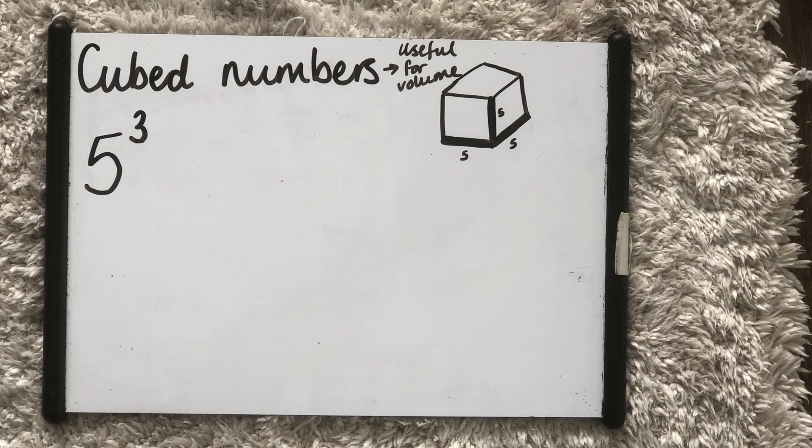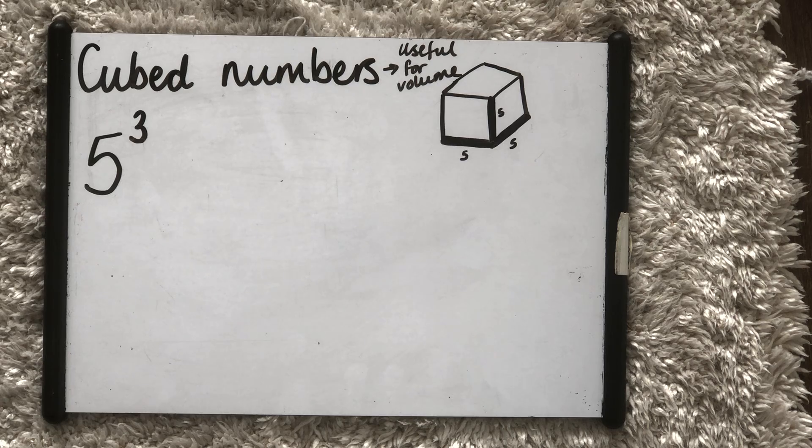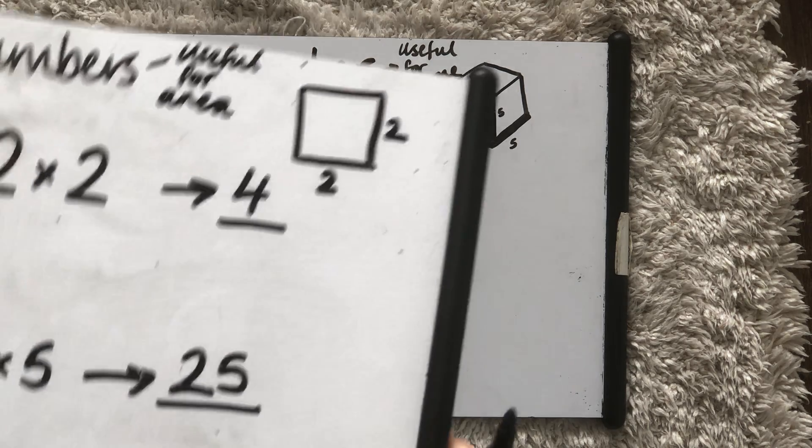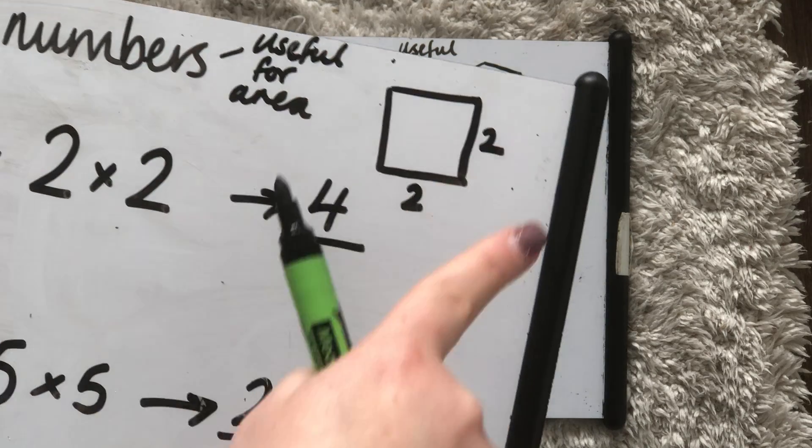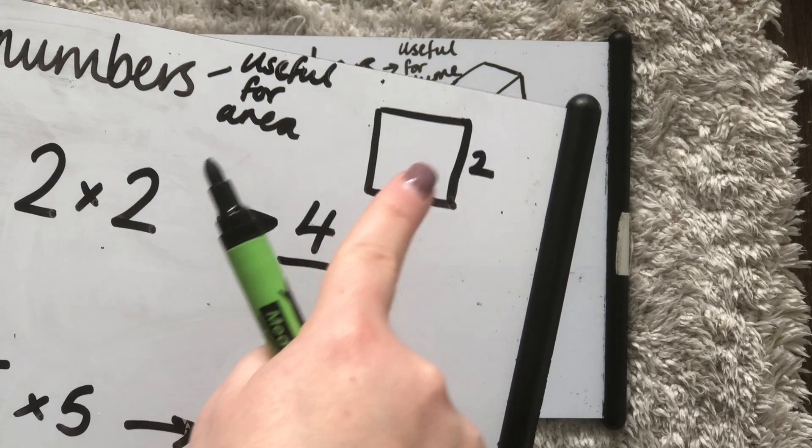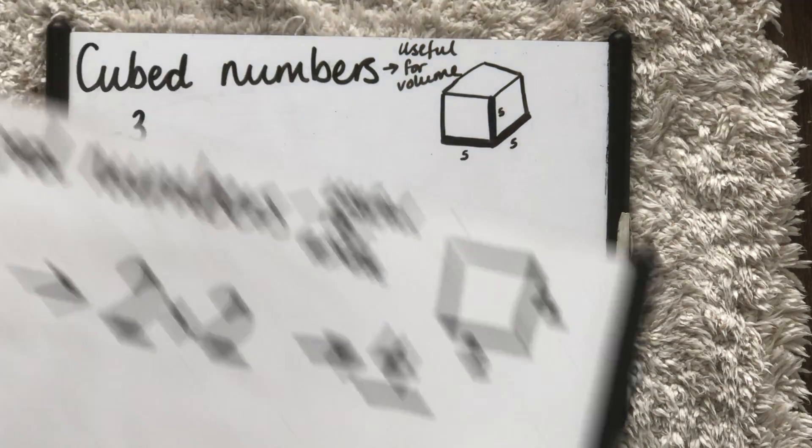Okay, so in this video we're going to have a look at cubed numbers. First of all, I thought I'd explain to you why it's called a cubed number. You know that a squared number is called a square number because when you have your square you can do 2 times 2, which is useful for area.